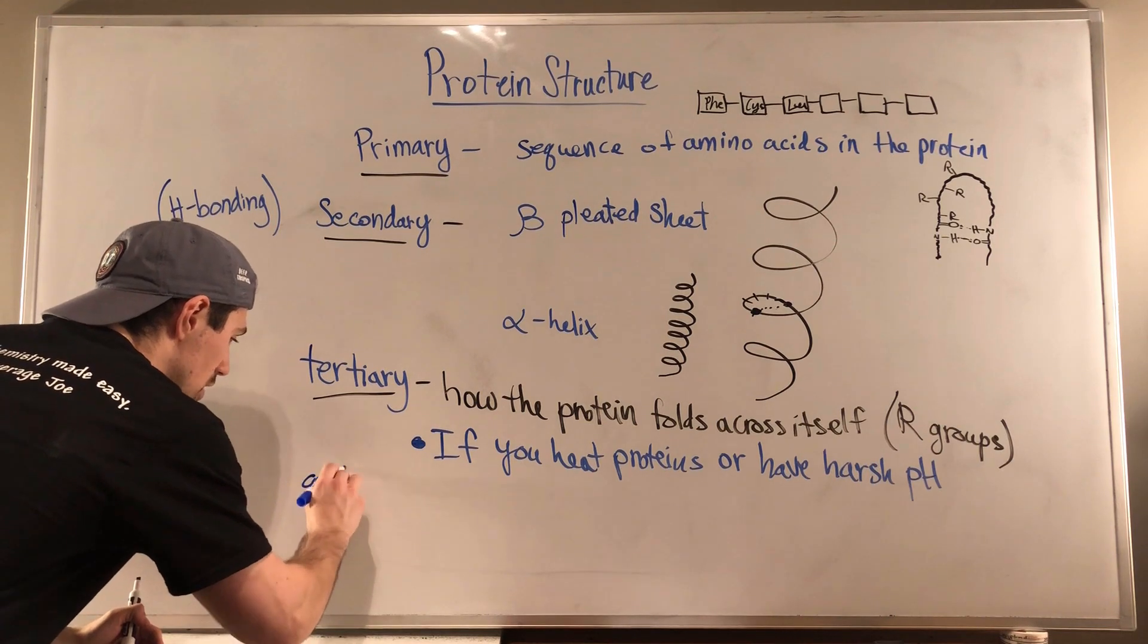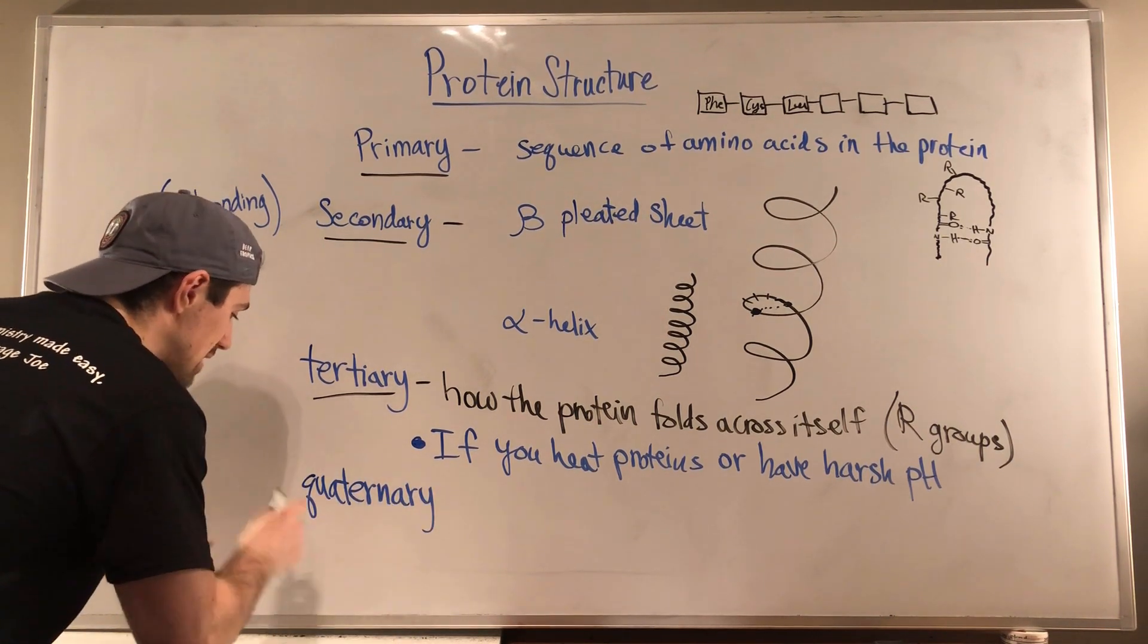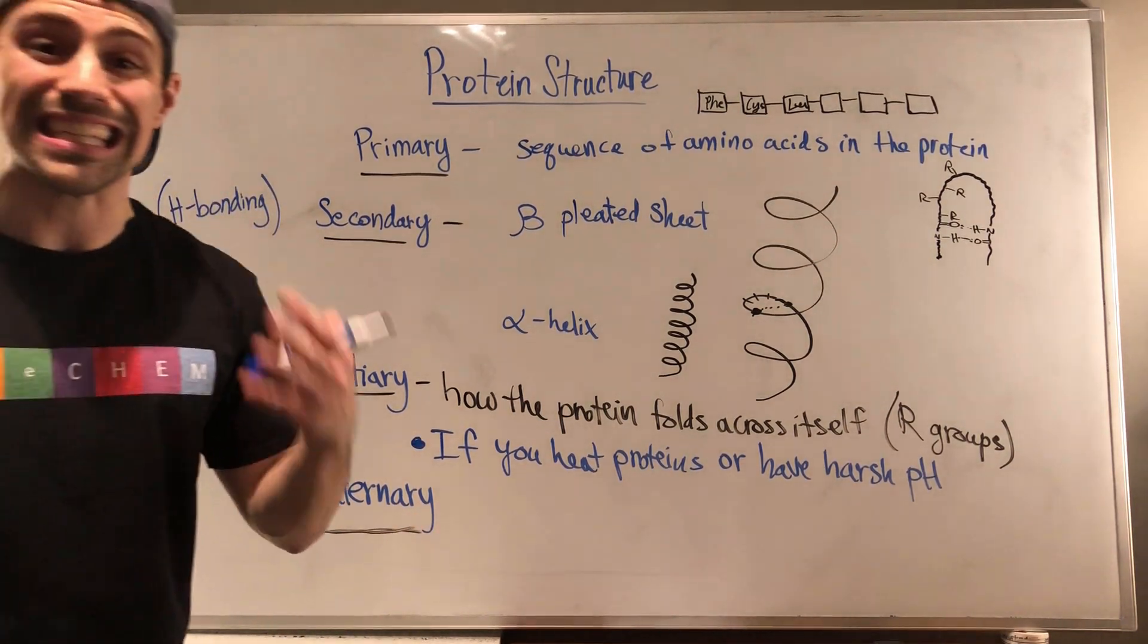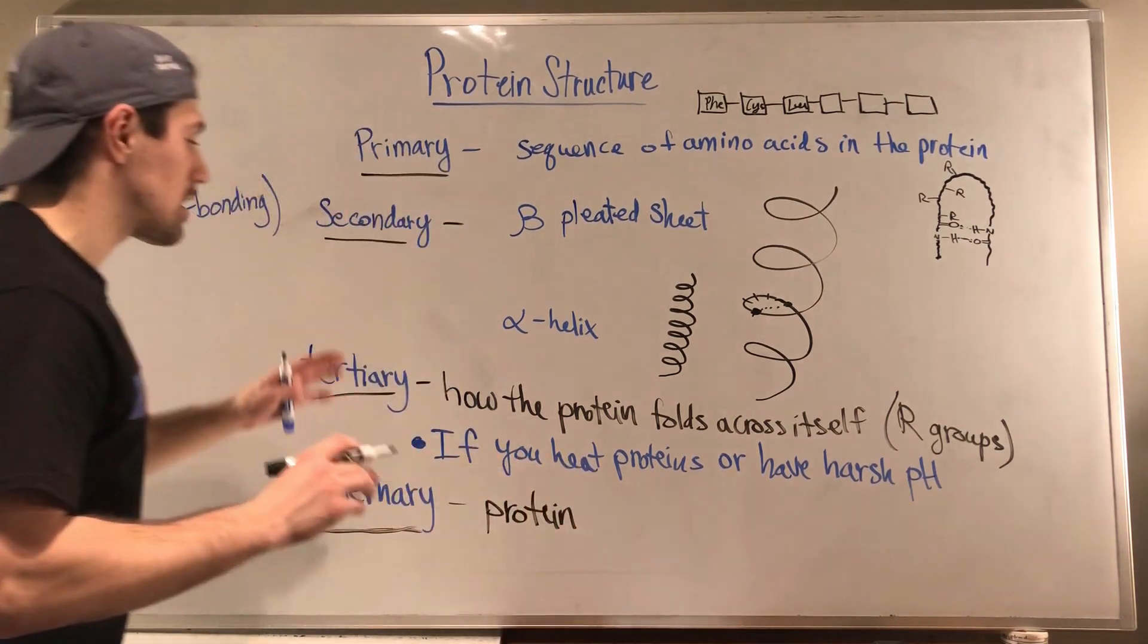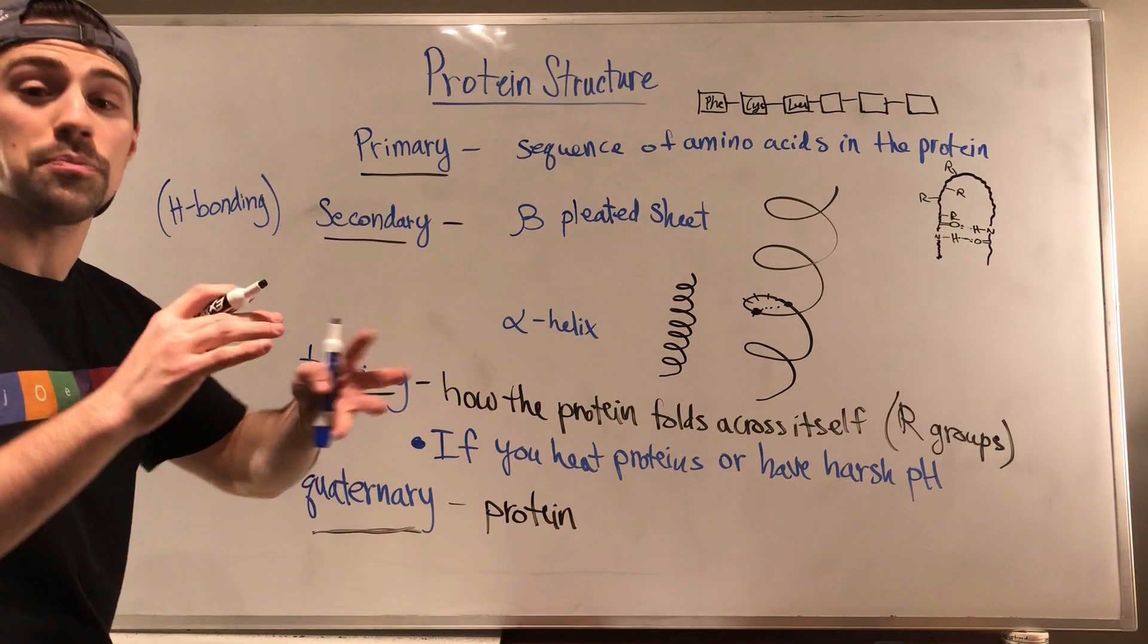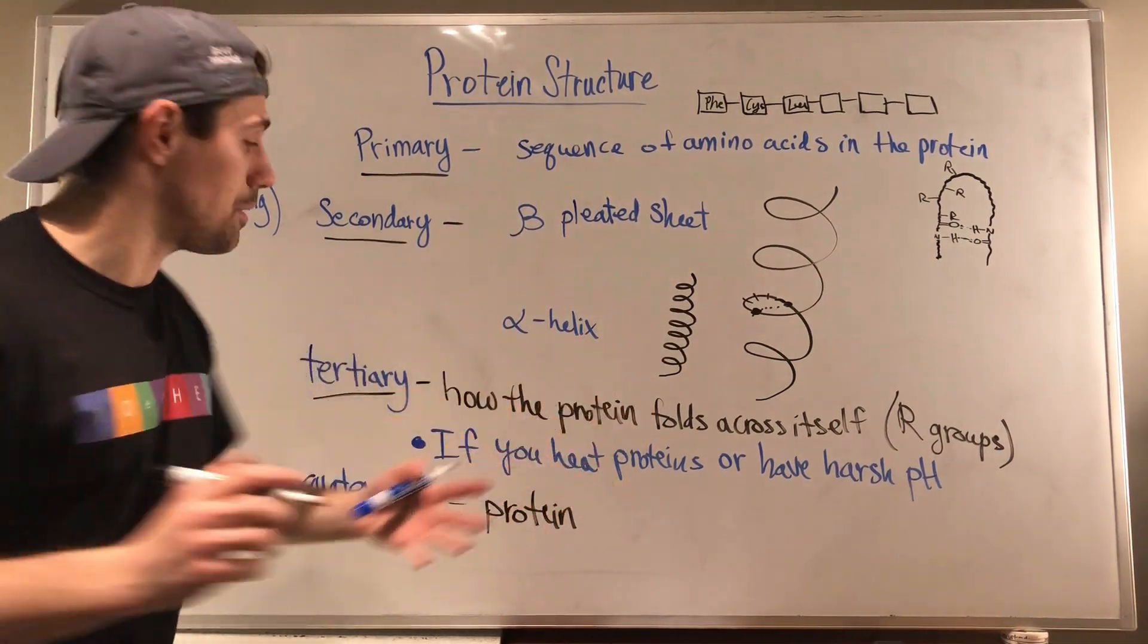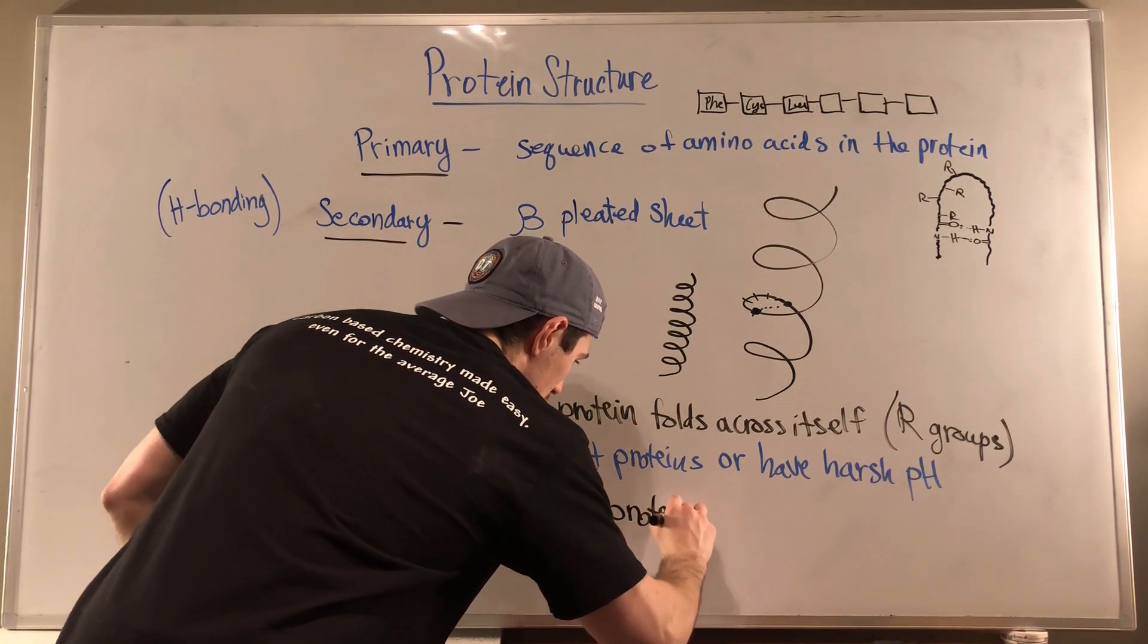And last but not least, there's something called quaternary structure. And that's actually when you have a protein party, you get a bunch of proteins together and you have protein. It's like tertiary structure, like tertiary structure, tertiary interactions, but you have it between different big proteins, different polypeptides. It's also protein-protein interaction.